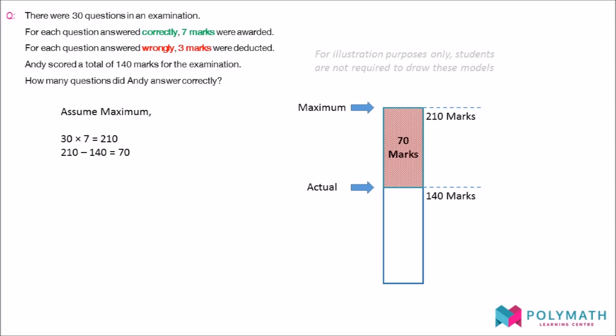When we replace one correct answer with one wrong answer, Andy not only loses the seven marks awarded for the correct answer, but also loses three marks as they were deducted for a wrong answer.